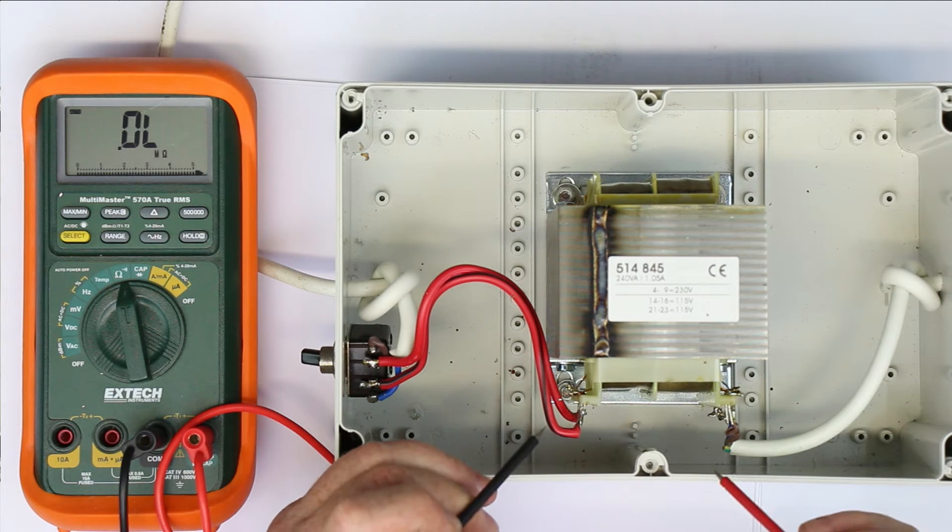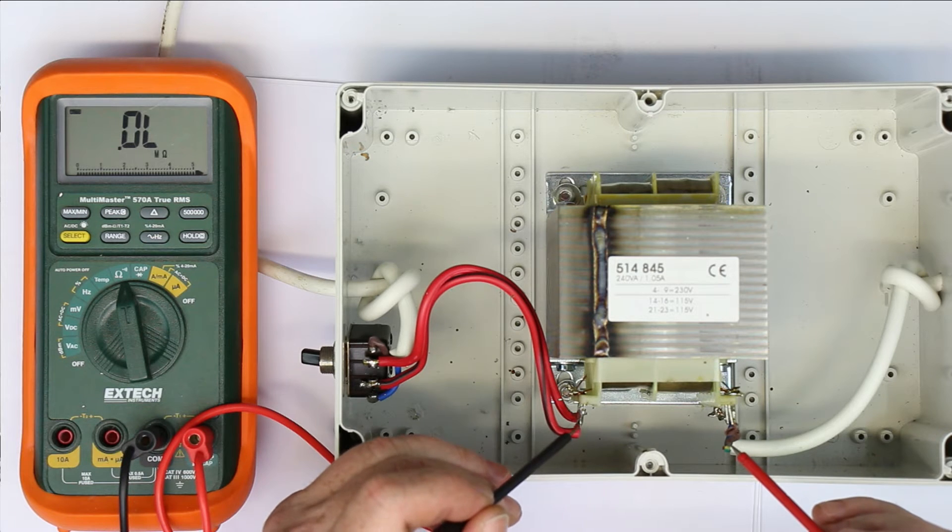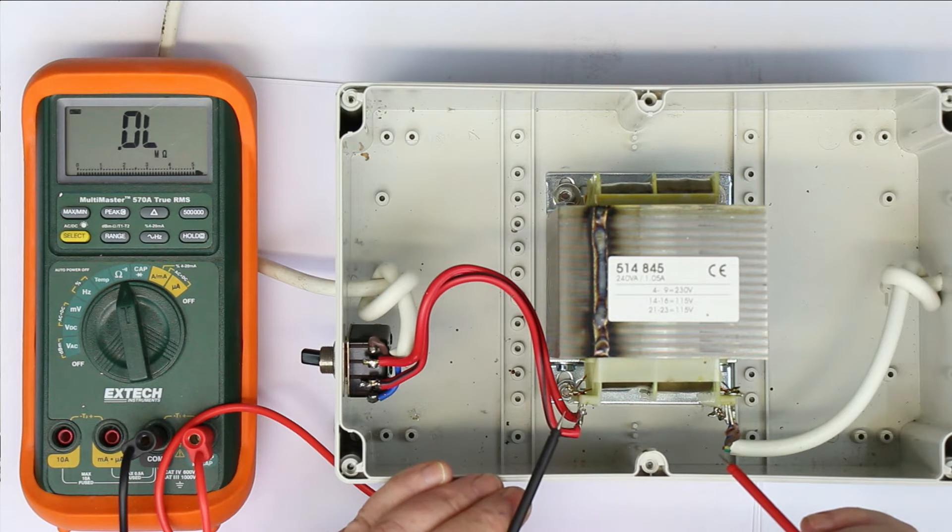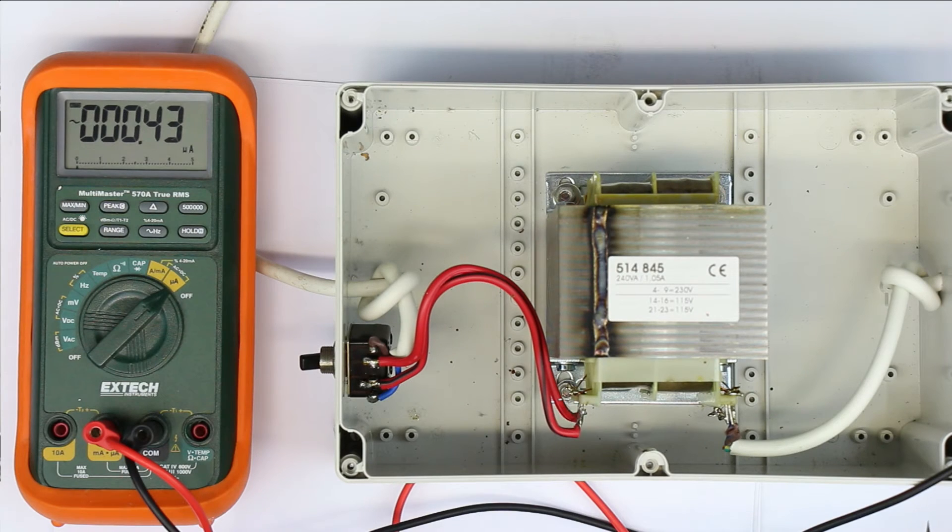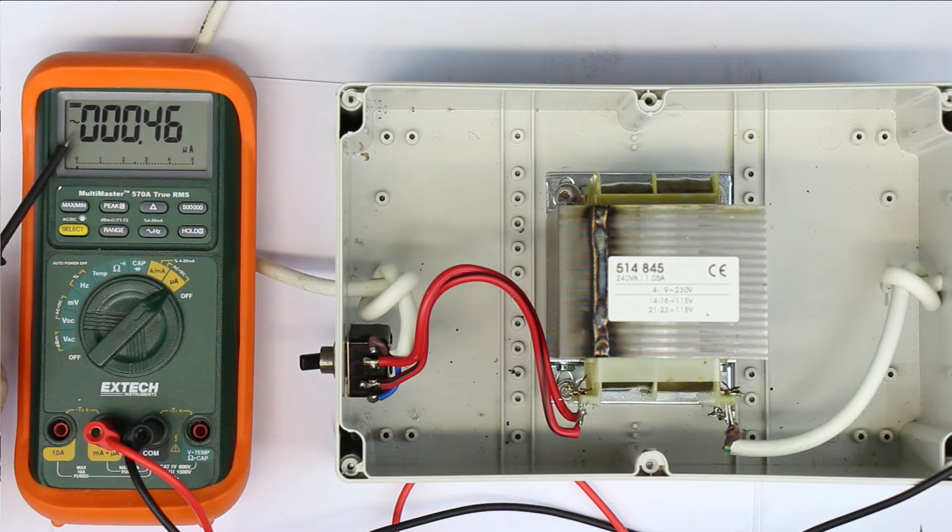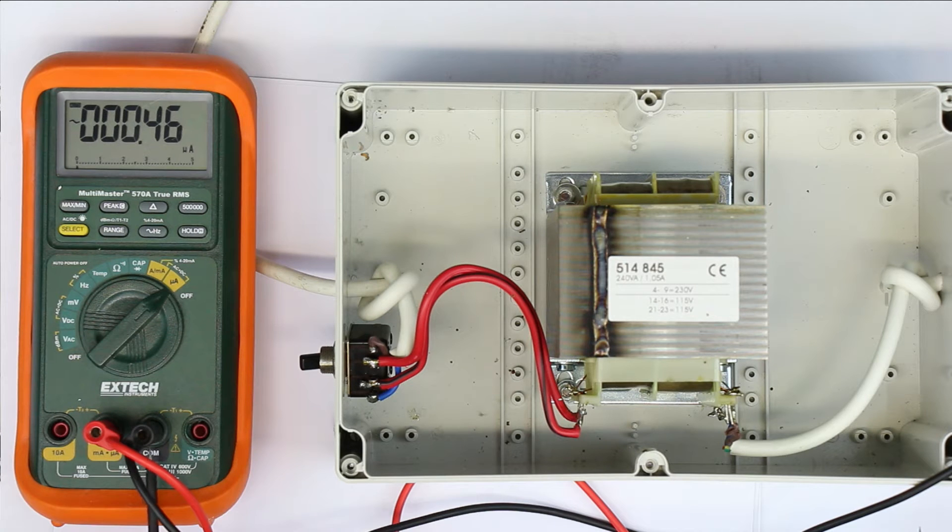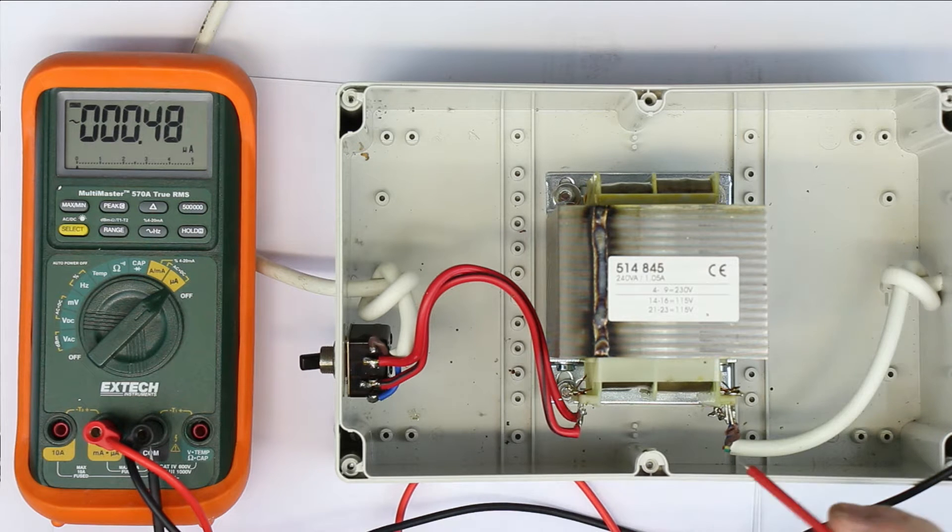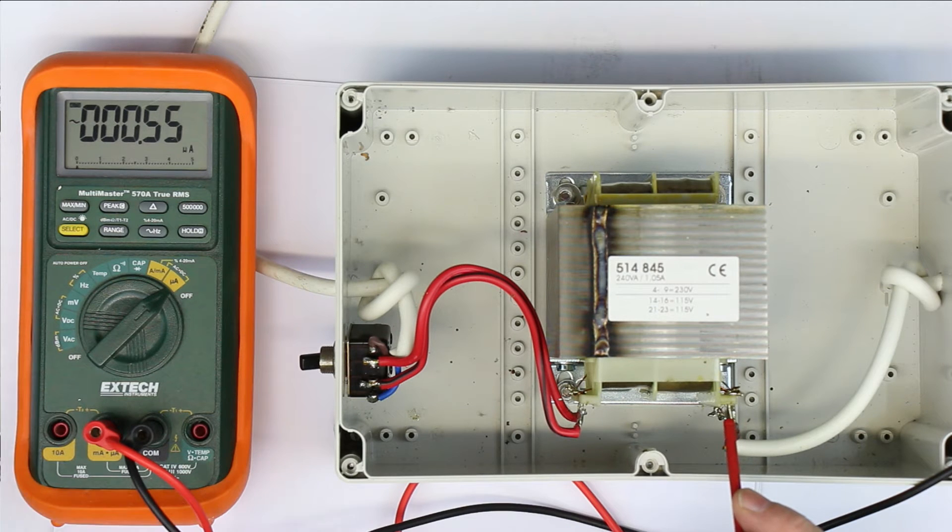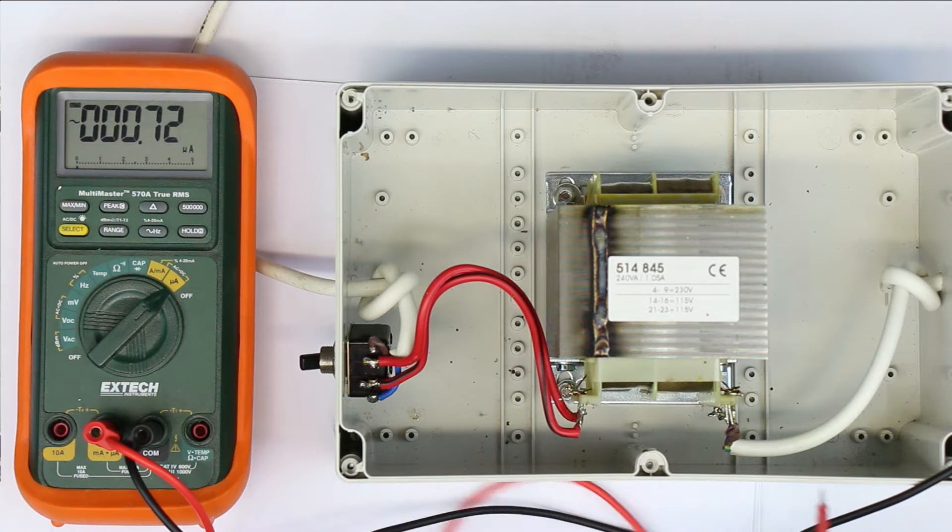But in a moment, I will show you that there is very well a path from primary to secondary for AC voltages. Just to explain how the multimeter is now connected: I've set it to microamps AC voltage, and the common is connected to earth, to protective earth.